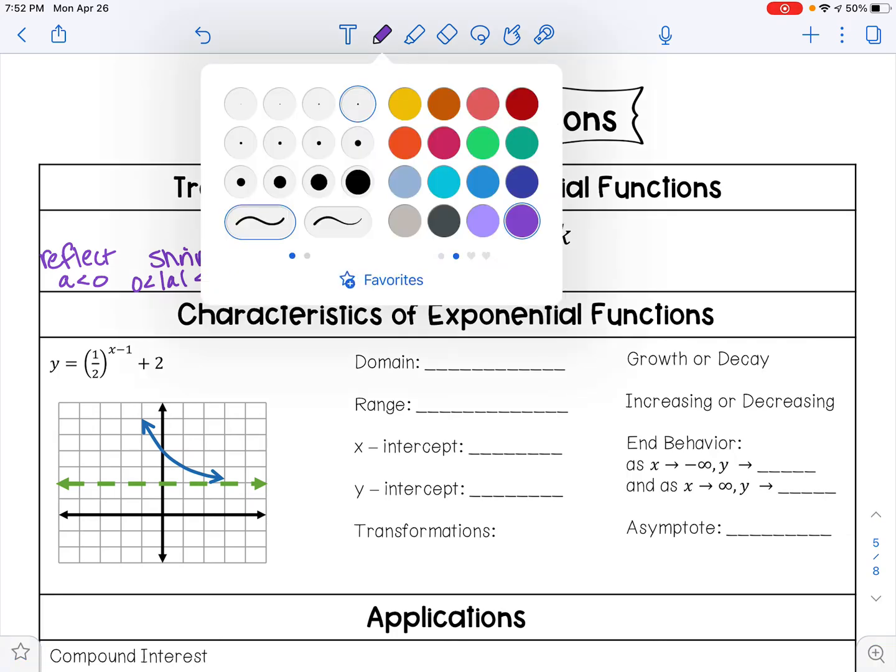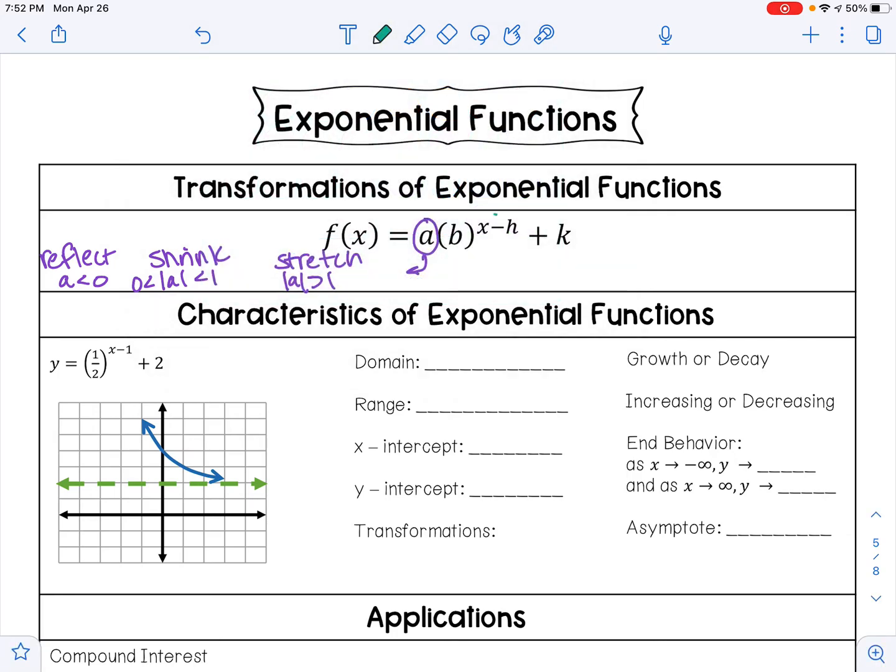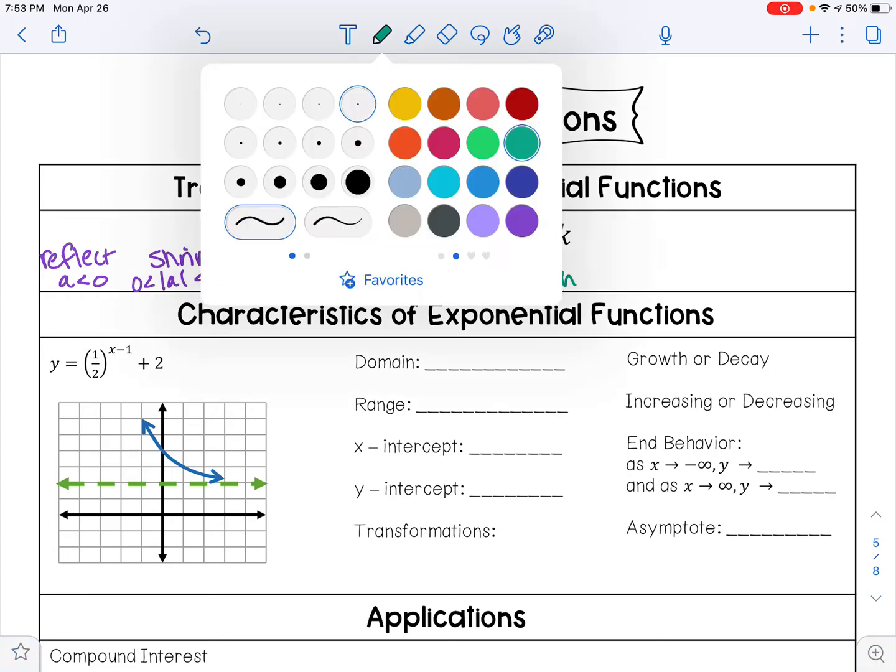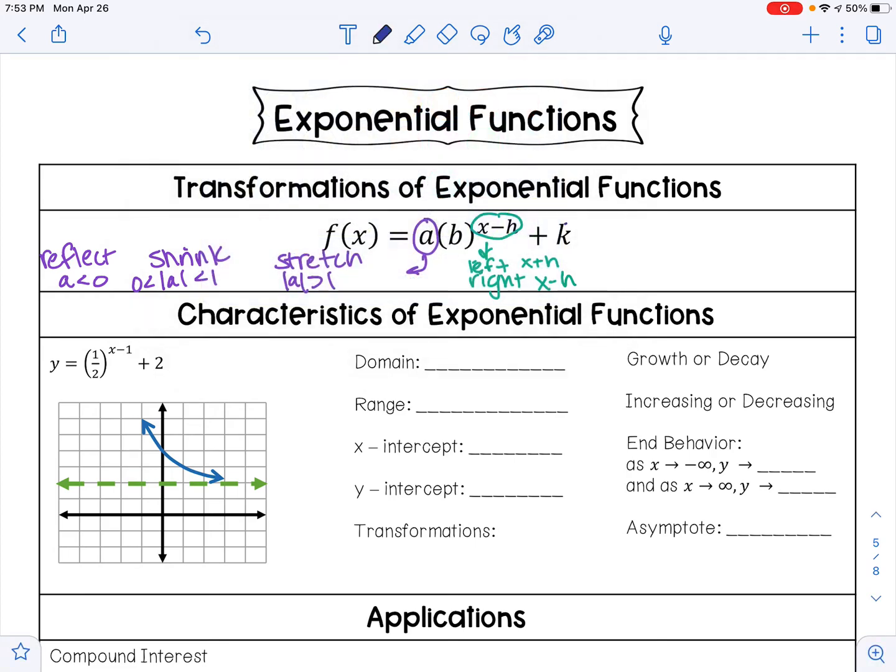When you have x minus h, that tells you if you are going left or right. You will go left if you have x plus h, and you will go right if you have x minus h.